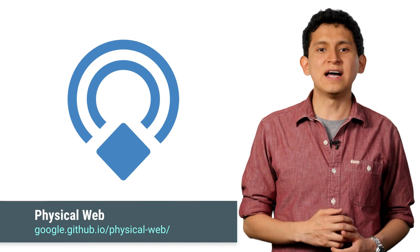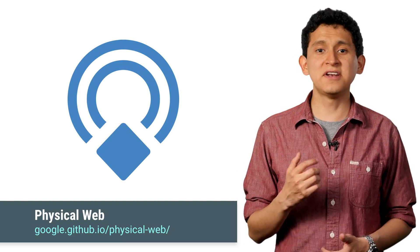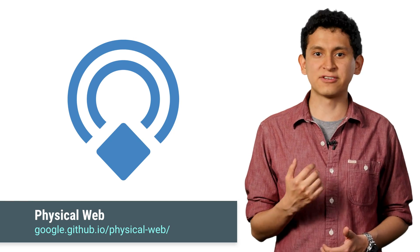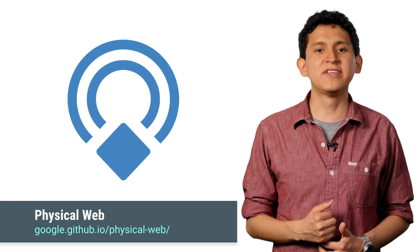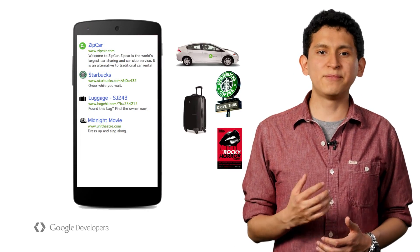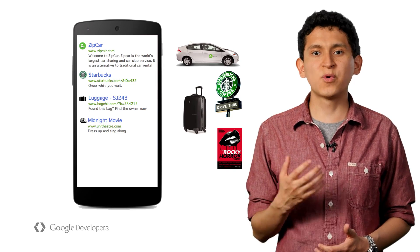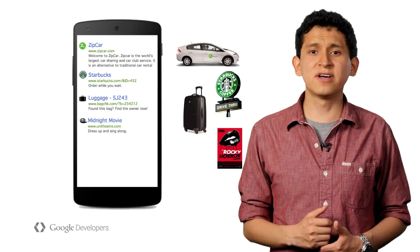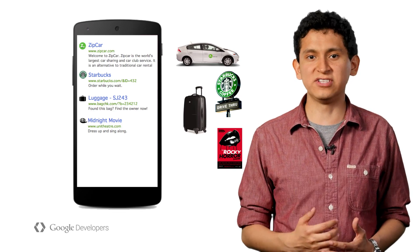Let's take a step back for a moment and talk about the physical web. The physical web is an early stage experimental project that allows users to discover devices around them. Using BLE, objects can broadcast a URL that the physical web picks up and presents to the user. For example, a movie poster can broadcast a link to the movie trailer, or a parking meter can broadcast a link to a website where you can pay for parking. Either way, the physical web concept is similar to that of QR codes, but the physical web offers some key advantages.